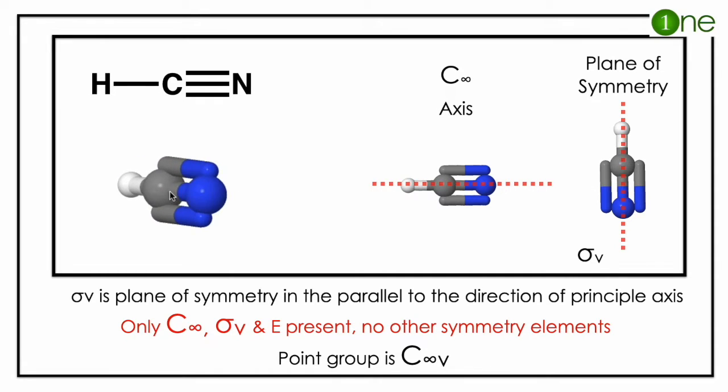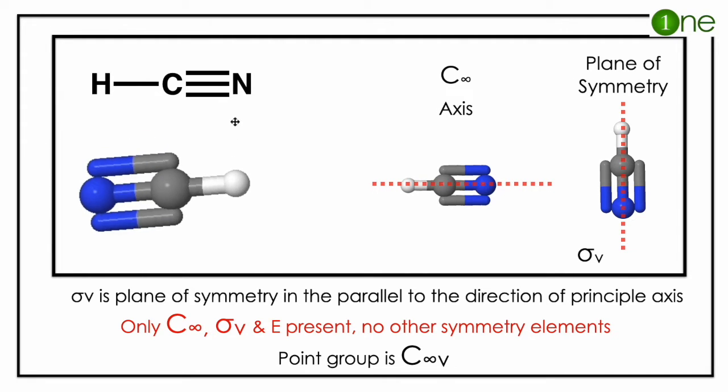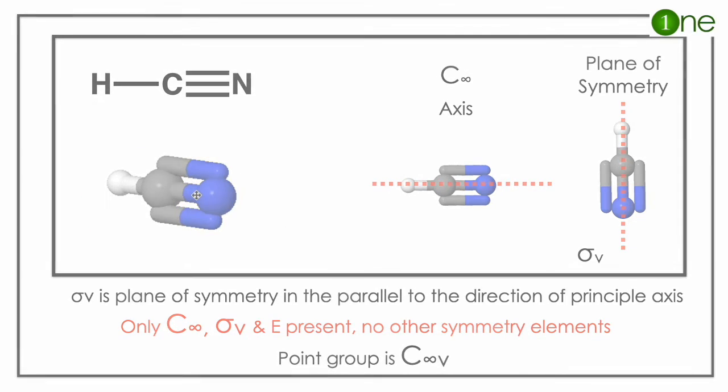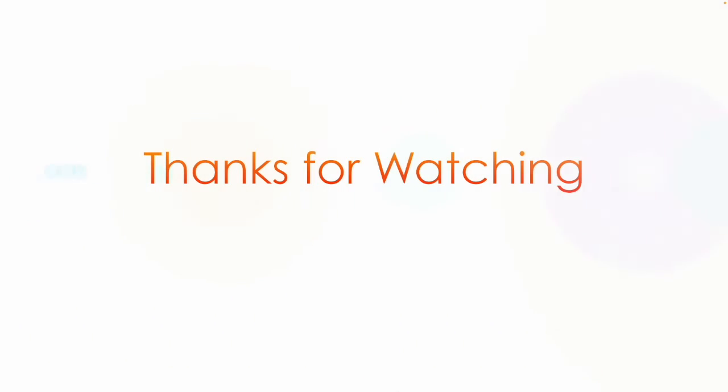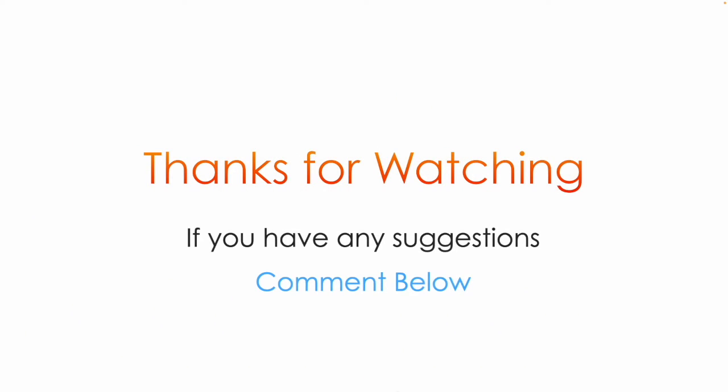So the point group of the molecule is C infinity v. The concept to outline here is if only C infinity and sigma v are present, then the point group of the molecule is C infinity v.